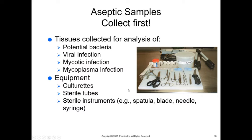When collecting tissues, consider what you're looking for — bacterial, viral, mycotic, or mycoplasma infection — as storage and culturing methods differ. Think about what types of culturettes you'll need, whether sterile tubes and sterile instruments are required to avoid contaminating a space before obtaining a culture, and label everything ahead of time.